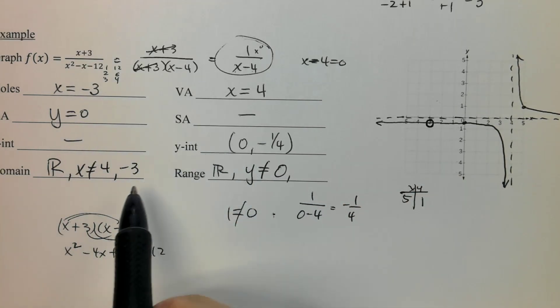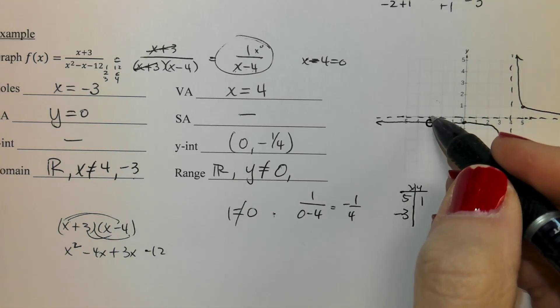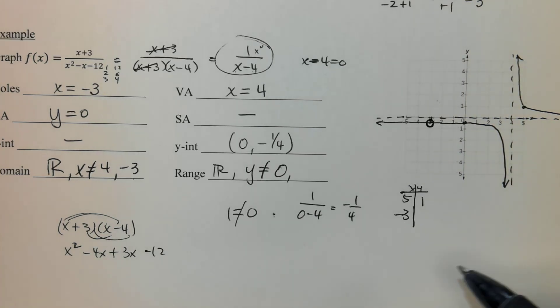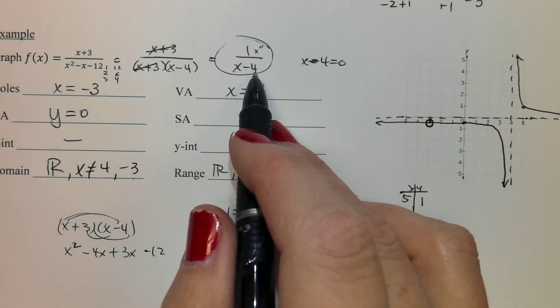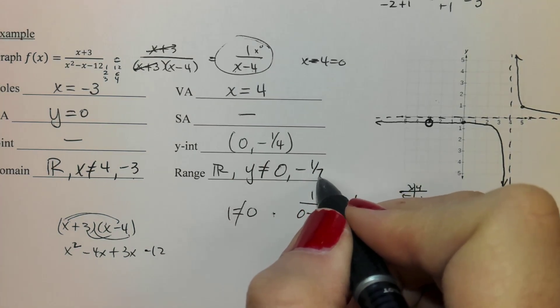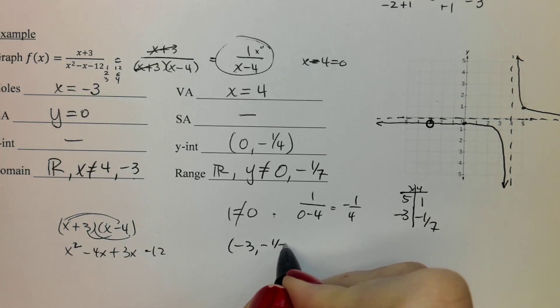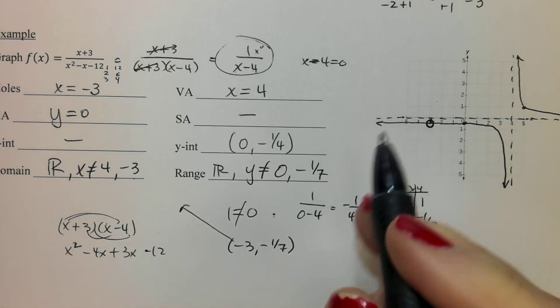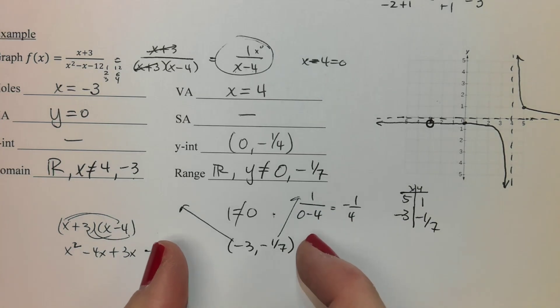Range is everything except horizontal asymptote, so zero. And then like I talked about the one above, you have to have the y-value that goes with your hole. So if I had plugged in a negative three, we're trying to figure out how far down is that point. So if I plug a negative three in there, negative three minus four is negative seven. So I've got negative one-seventh. That is the other value I have to exclude. As a hole, it is a point, negative three, negative one-seventh, and the x has to be excluded, and the y has to be excluded. So if you have a hole, there has to be an x and a y value for that hole.